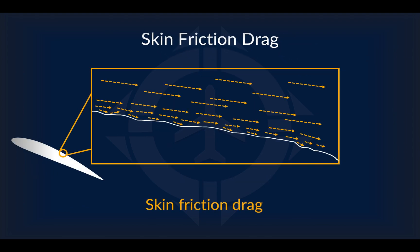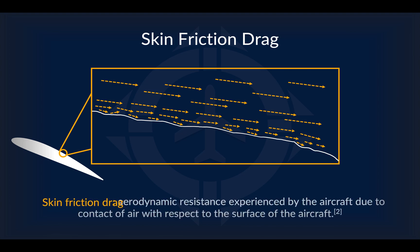We will begin by looking at skin friction drag. This type of drag is, as the name suggests, a type of drag that occurs on the surface or skin of the aircraft. Though an aircraft may appear very smooth on the outside, it inevitably has small dents and interruptions on its surface. This provides small spots where wind gets trapped, causing pockets of idle air to form, which in turn causes skin friction drag. The more official explanation is aerodynamic resistance experienced by the aircraft due to contact of air with respect to the surface of the aircraft.